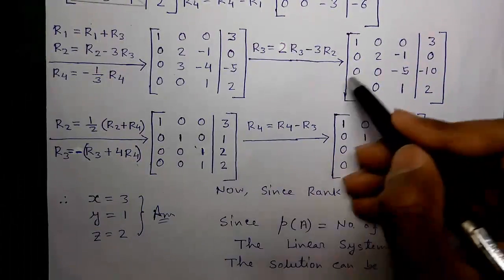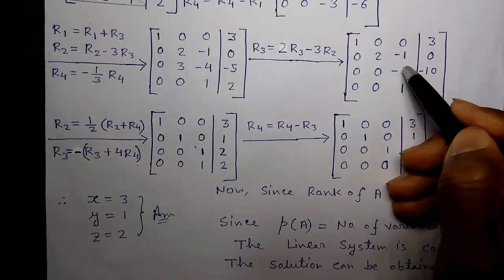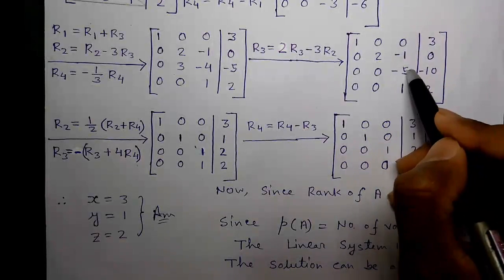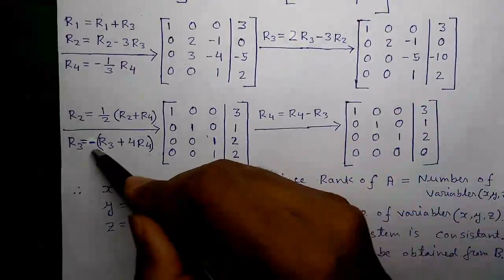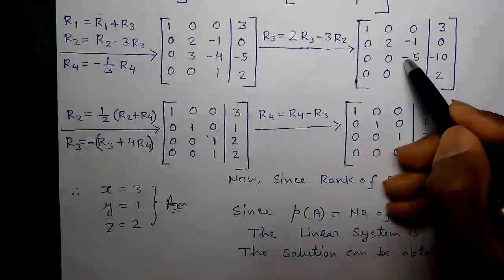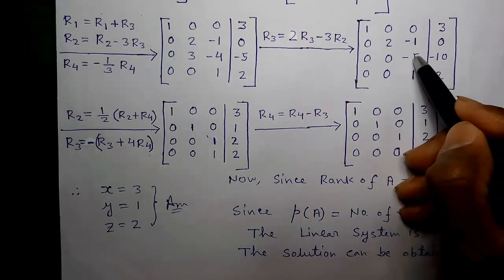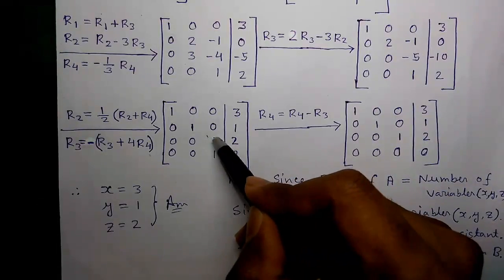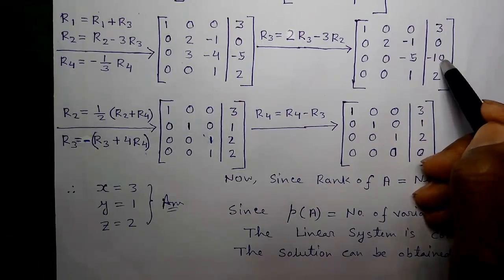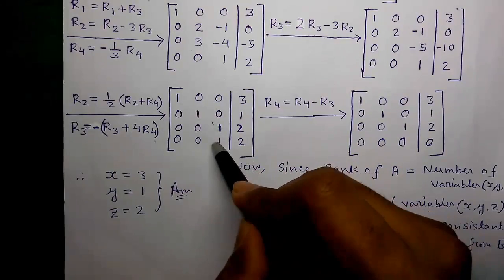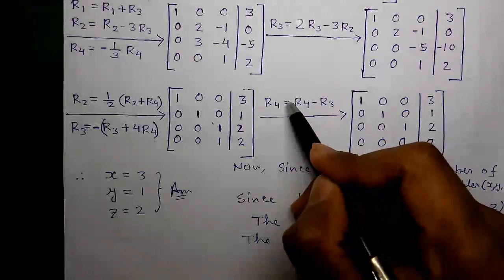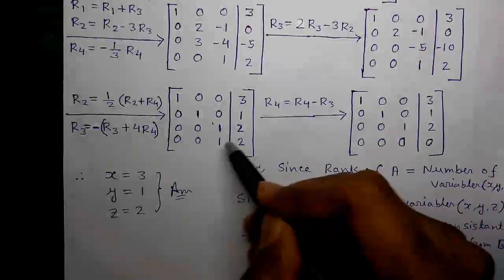For row 3, we currently have −5 and need to make it 1. We apply R3 = (R3 + 4·R4) × (−1): −5 + 4×1 = −1, times −1 = +1; and −10 + 4×2 = −2, times −1 = +2. Then to convert the remaining element to zero, R4 = R4 − R3: 1 − 1 = 0 and 2 − 2 = 0.